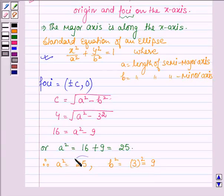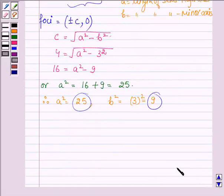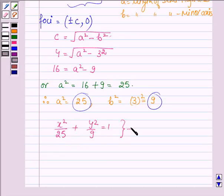Now let us substitute a-square is equal to 25 and b-square is equal to 9 in this standard equation to get the equation of an ellipse which we are required to find. So we have x-square upon 25 plus y-square upon 9 is equal to 1 as the equation of an ellipse for the given condition.